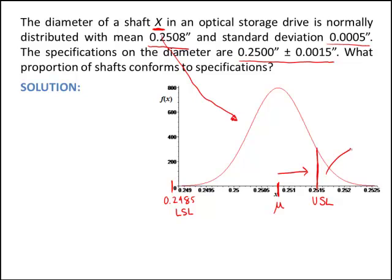Shafts with diameters beyond 0.2515 are too large and will not conform. So this is the non-conforming region, and in between these two bounds is the conforming region. We're asked to find what proportion of shafts conform to specifications — that is, what proportion of shafts have diameters between the lower and upper specification limits. Let's turn this into a probability problem.